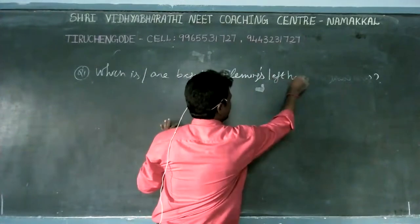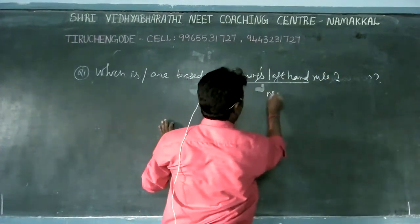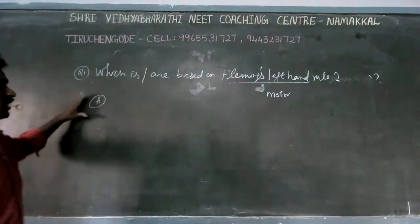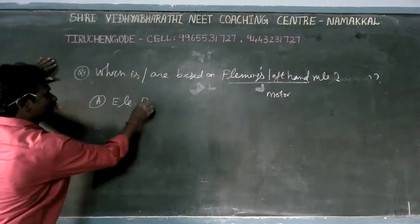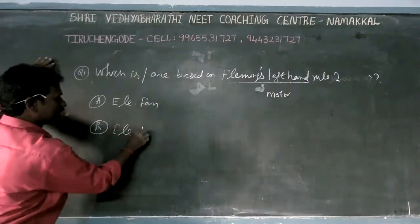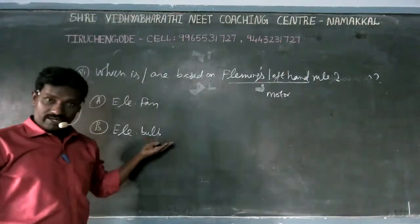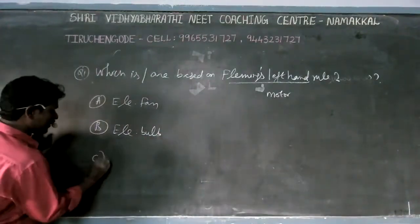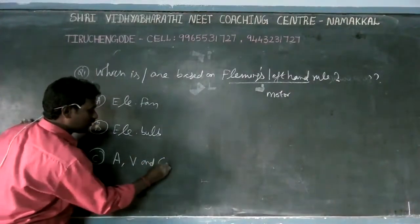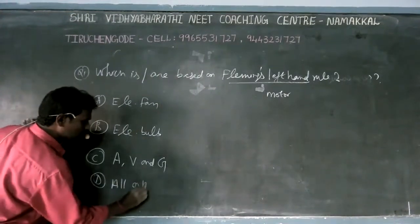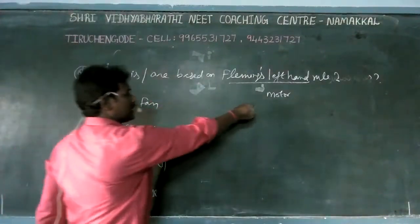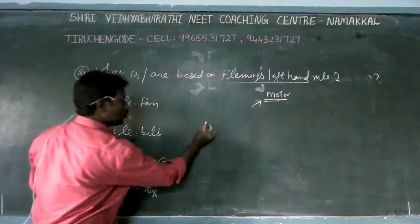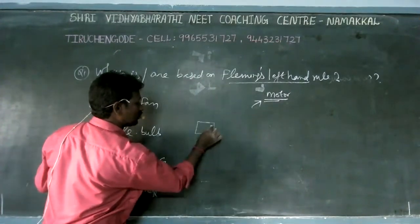Question: Which devices are based on Fleming's left-hand rule? Fleming's left-hand rule is the motor rule. The options are: first option — electric fan; second option — electric bulb (including tube light, 100-watt bulb, mercury lamp, sodium vapor lamp, serial bulb); third option — ammeter, voltmeter, and galvanometer; fourth option — all of the above. The answer is motor-based. Motor means current functions through the motor.